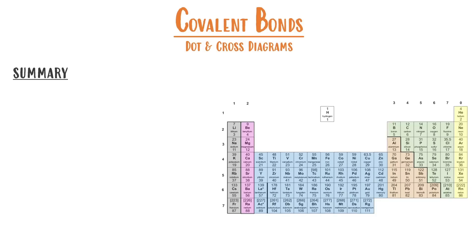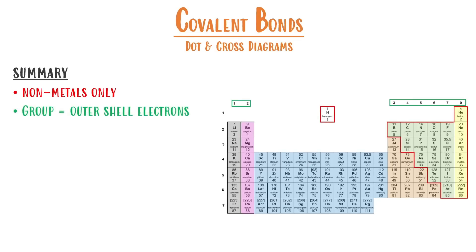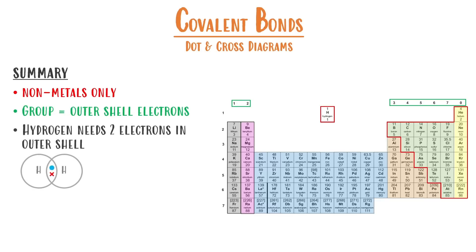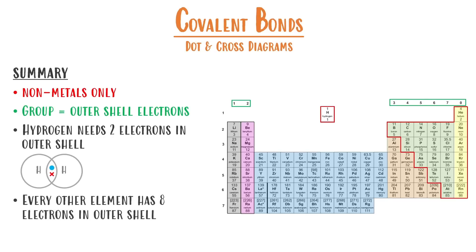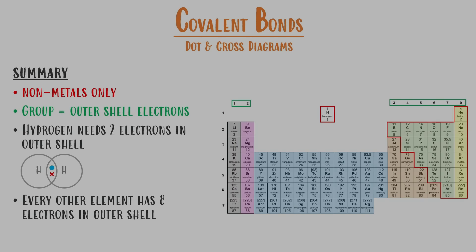Let's summarize. Remember, these covalent bonds only occur between our non-metals, and we find them on the right-hand side of our periodic table — don't forget about hydrogen. The group number tells us how many outer shell electrons. Whenever hydrogen is concerned, it only requires two electrons to complete its shell. Every other element needs eight. Keep those points in mind and you've mastered drawing dot and cross diagrams. If you have any questions, just leave them down below and I'll do my best to get back to you.